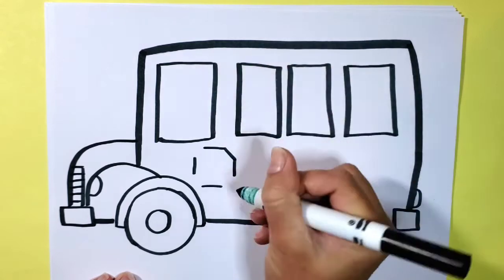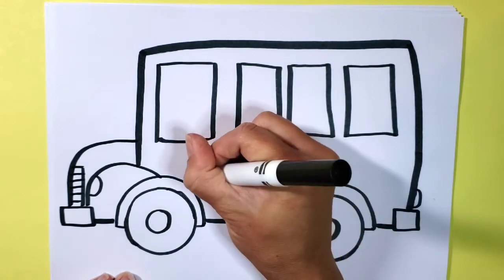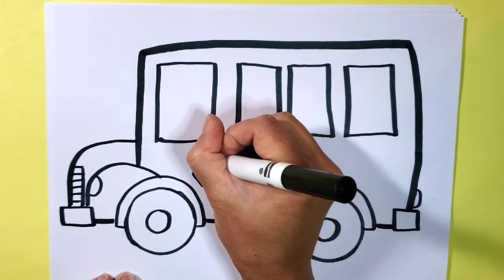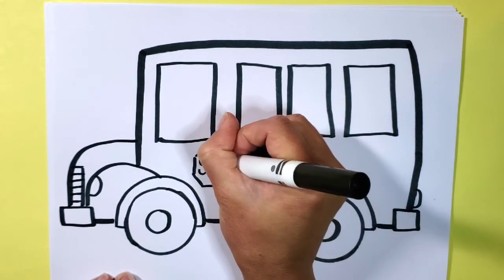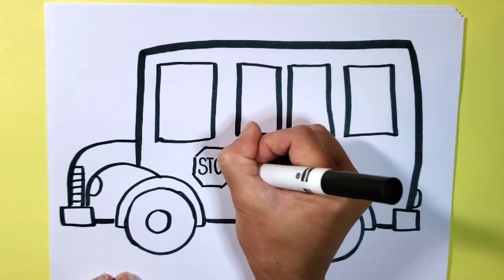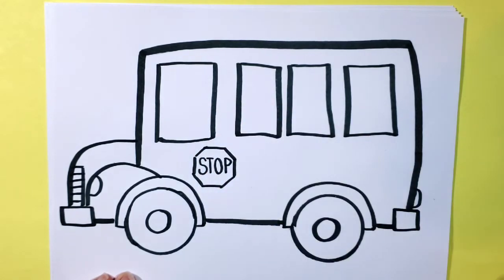I'm going to use diagonal lines to connect those like that to make an octagon. I'll go ahead and write stop in there, S T O P, all capital letters usually.